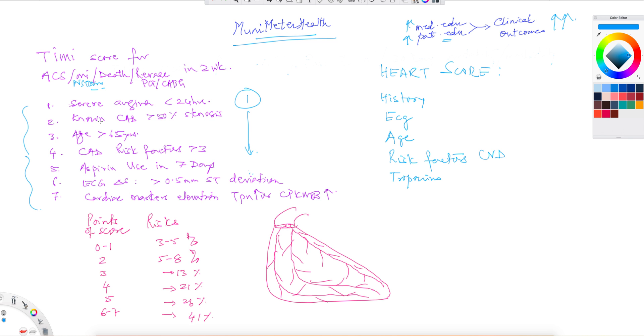Somebody's presenting now, let's see the history first. Severe angina less than 24 hours, you give a score of one. Likewise, a known CAD if a patient's already had an angiography, for instance, patient has 50% stenosis here, that will mark one again.